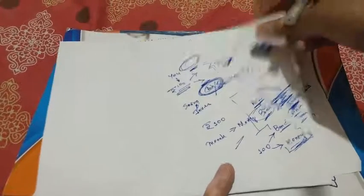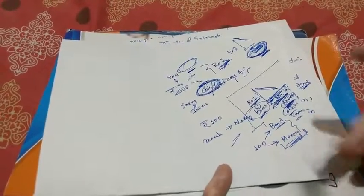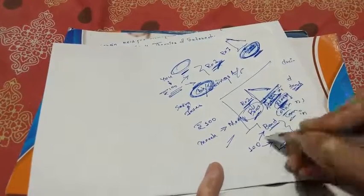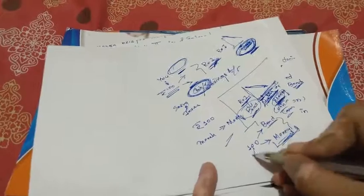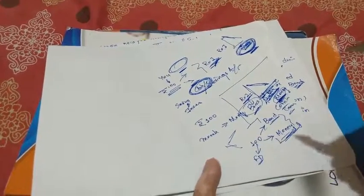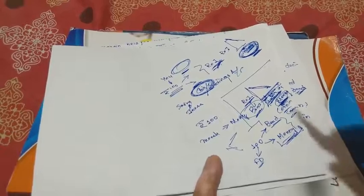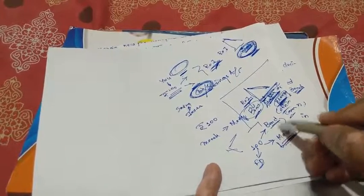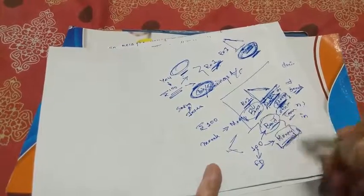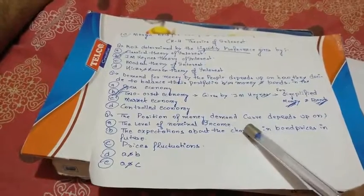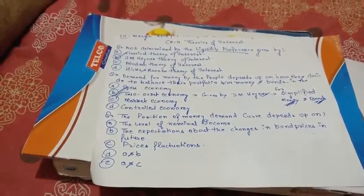In the real scenario, 100 rupees can be spent on many things — bonds, fixed deposits, and so on. But in order to present his theory, JM Keynes took a very simplified economy and considered only two things: bonds and money. So the answer to this question is the two-asset economy.